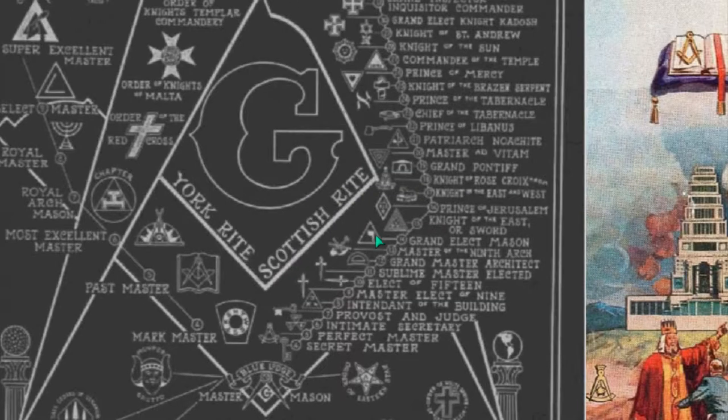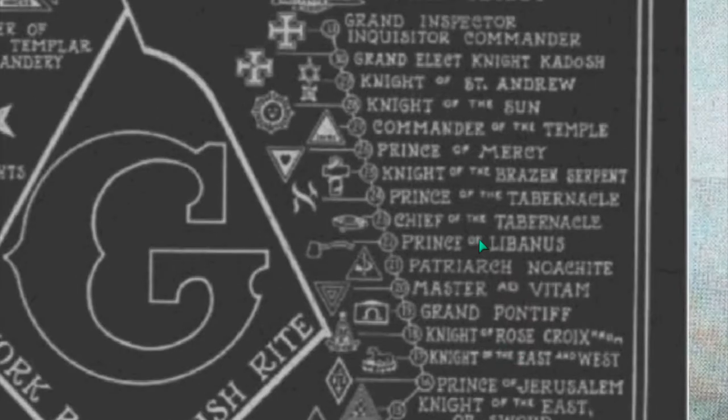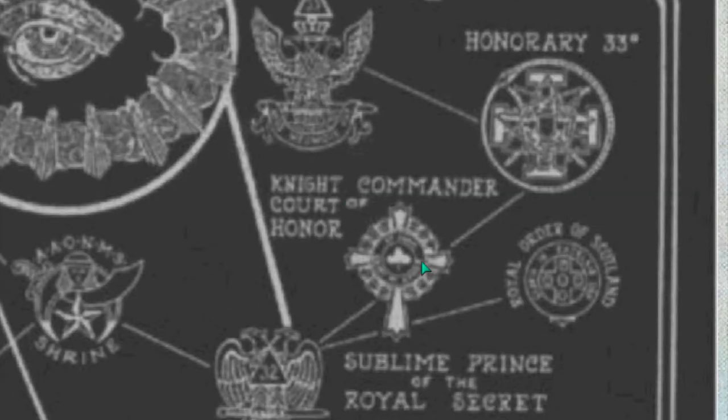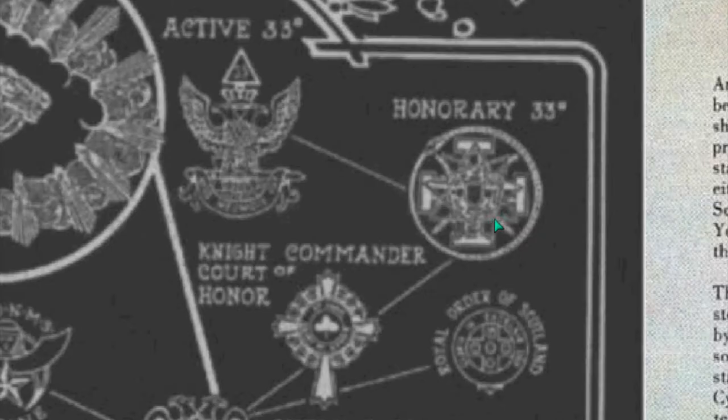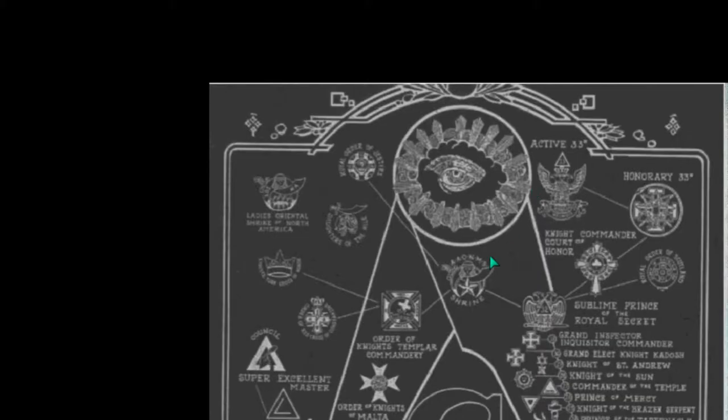Moving back to the Scottish Rite — look at how many degrees there are: 33 in all, culminating into the 32nd degree. By the 32nd degree, you can move into either the York Rite, the Scottish Rite, or into A.A.O.N.M.S. — the Ancient Arabic Order of the Nobles of the Mystic Shrine — the Shriner Freemasons. And then you have your honorary and active 33rd degrees, Knight Commander Court honors, honorary 33rd degree emblems, and double-headed eagles.